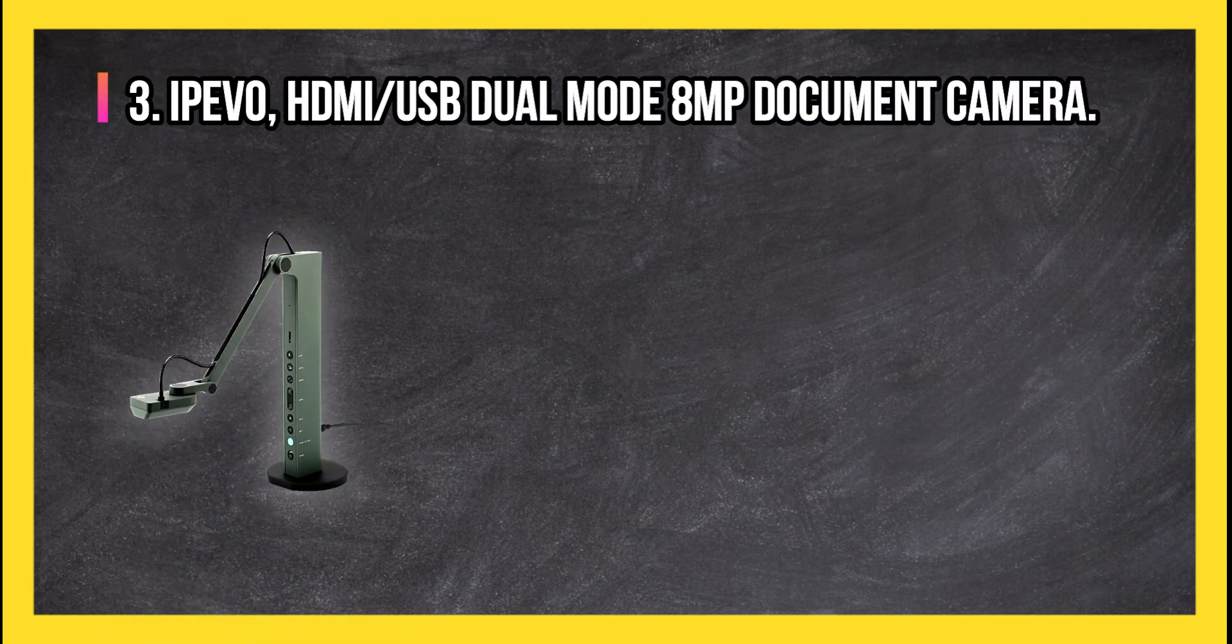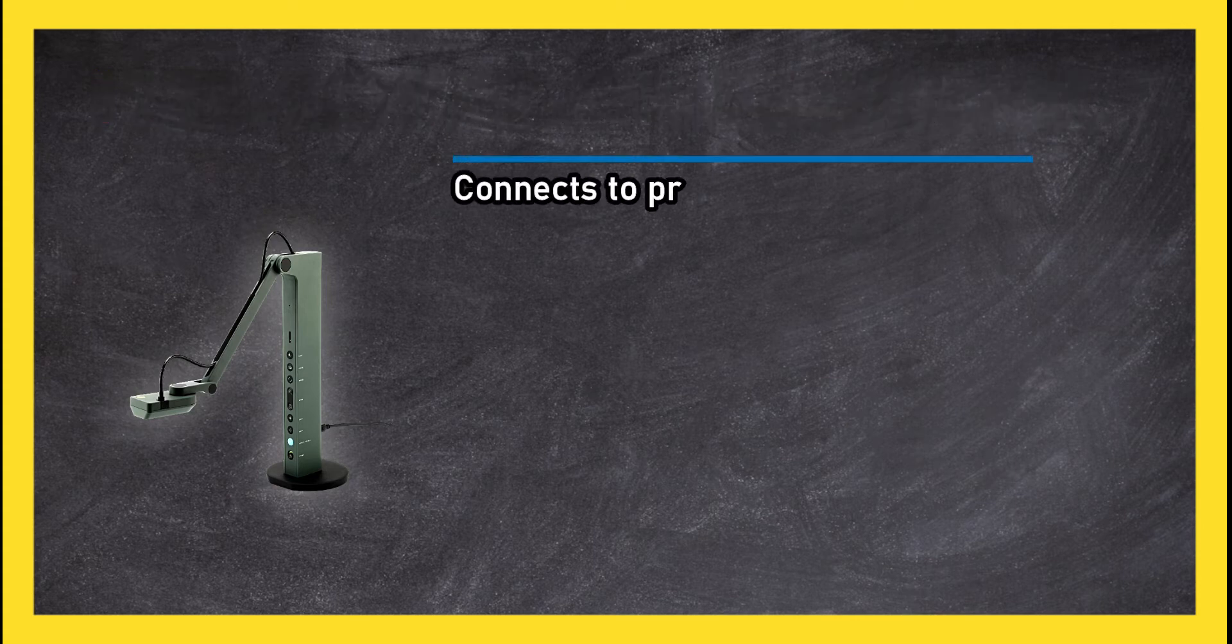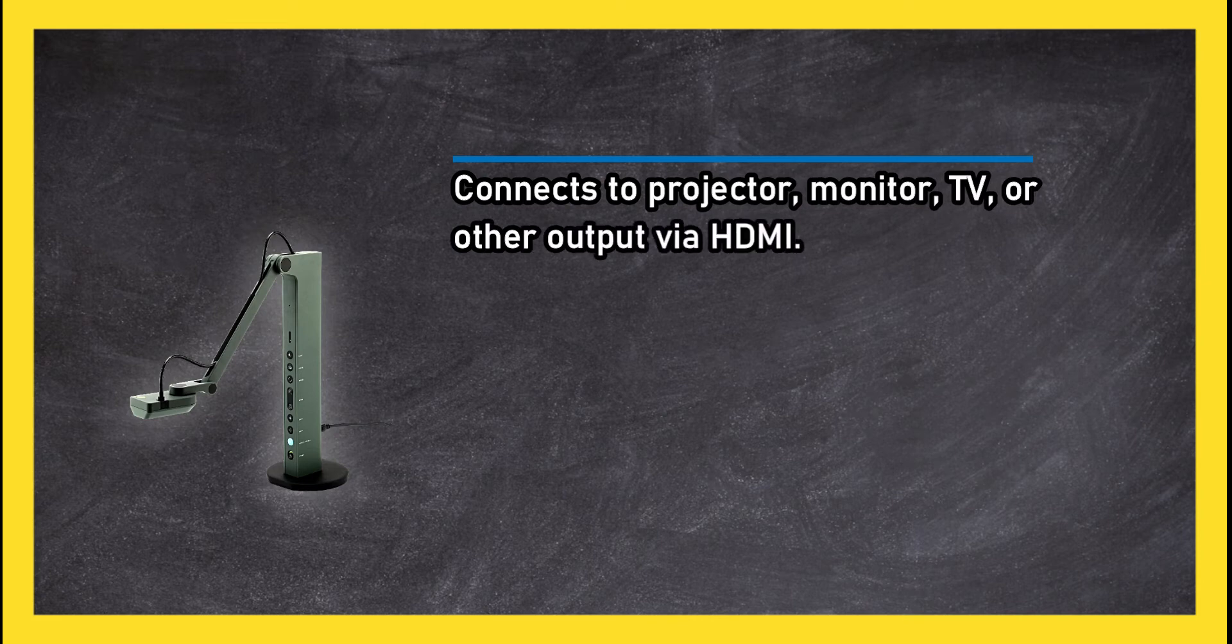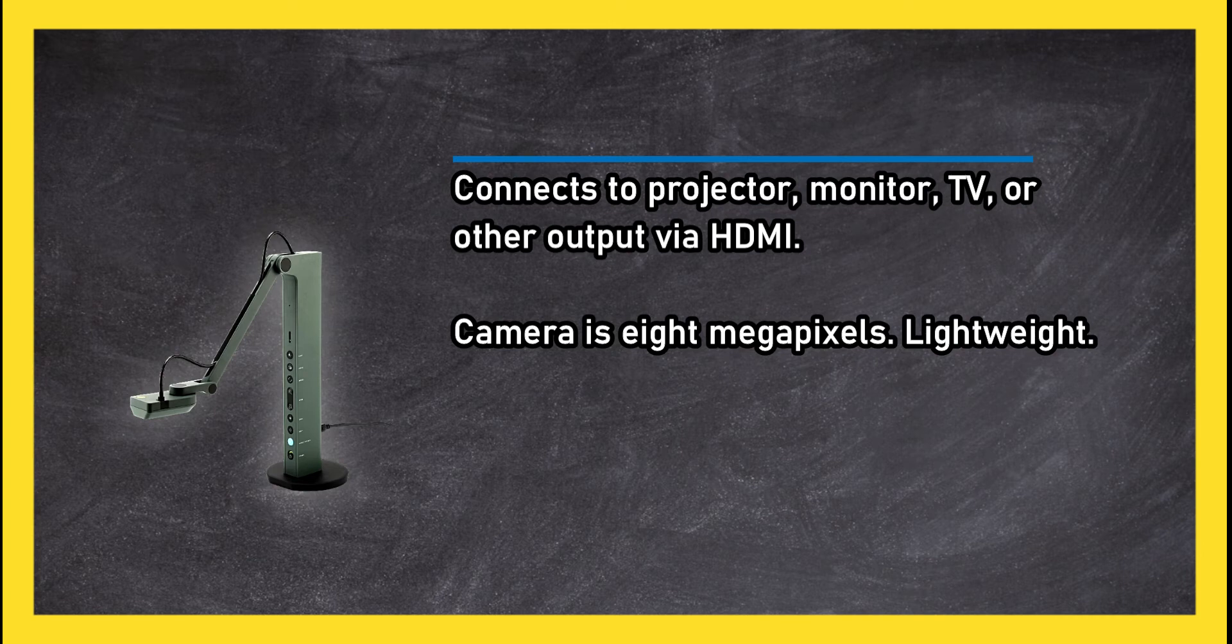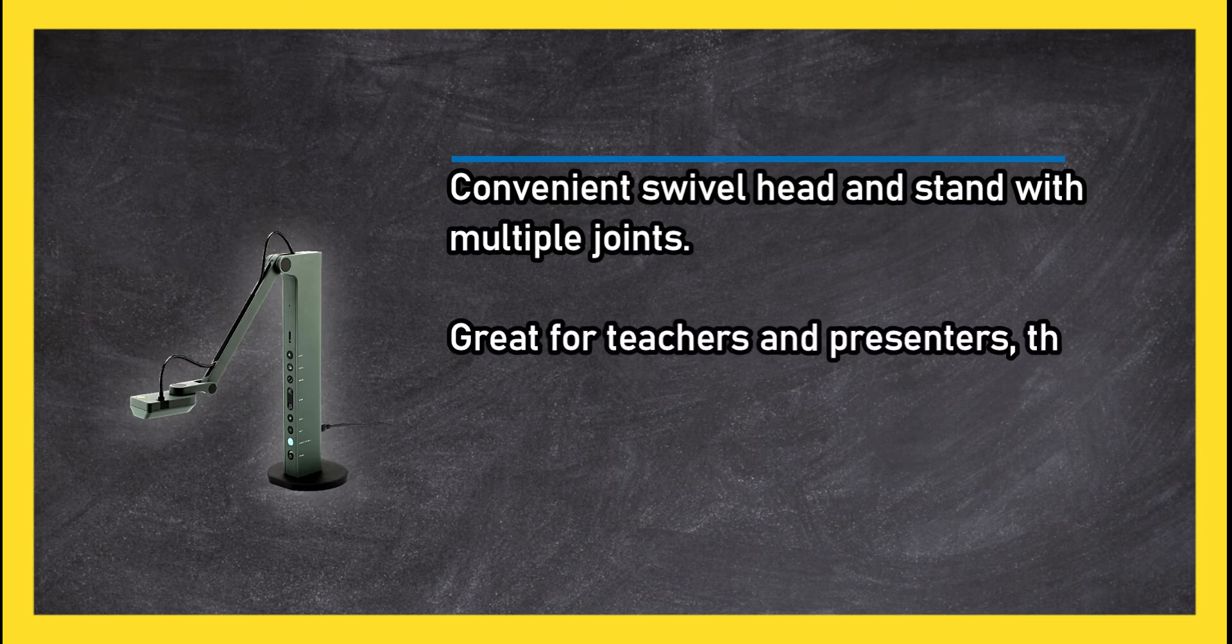USB dual mode 8MP document camera connects to projector, monitor, TV, or other output via HDMI. Camera is 8 megapixels, lightweight, convenient swivel head and stand with multiple joints. Great for teachers and presenters. This affordable document camera is acceptable for many uses.